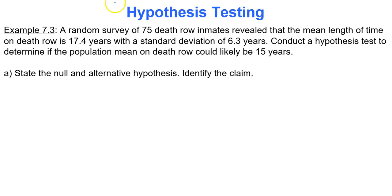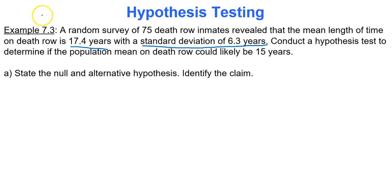In my example, I have a random survey of 75 death row inmates that revealed the mean length of time on death row is 17.4 years with a standard deviation of 6.3. Those are my sample statistics. We'll conduct a hypothesis test to determine if the population mean on death row could likely be 15 years — meaning mu equals 15.